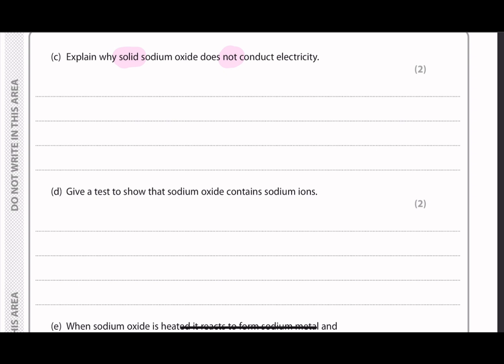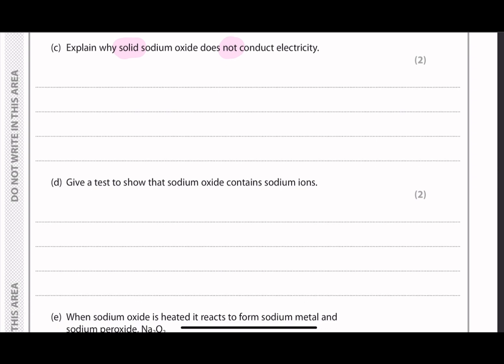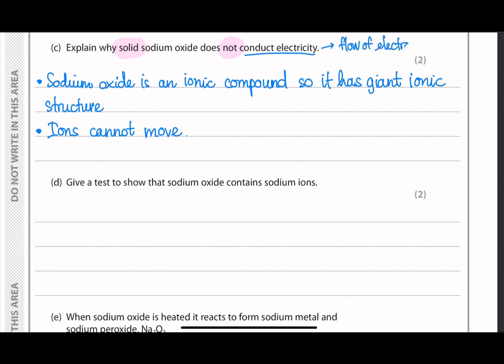Next question explains why solid sodium oxide does not conduct electricity. So the ability to conduct electricity relates to the ability of either ions or electrons to move. But because sodium oxide is an ionic compound, it has a giant ionic structure, that means the lattice structure has the ions packed next to each other. So then because it's in the solid state, ions cannot move. That means the electricity cannot flow, and they also don't have delocalized electrons. So there's no way that electricity can flow at all.